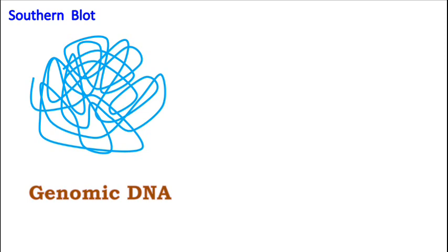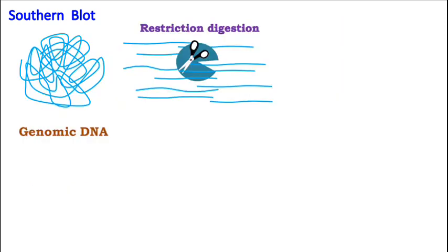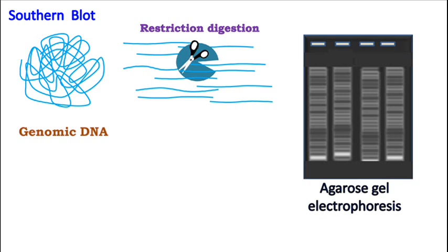The genomic DNA is first isolated and treated with restriction enzyme. The fragments generated by restriction digestion are separated by agarose gel electrophoresis.